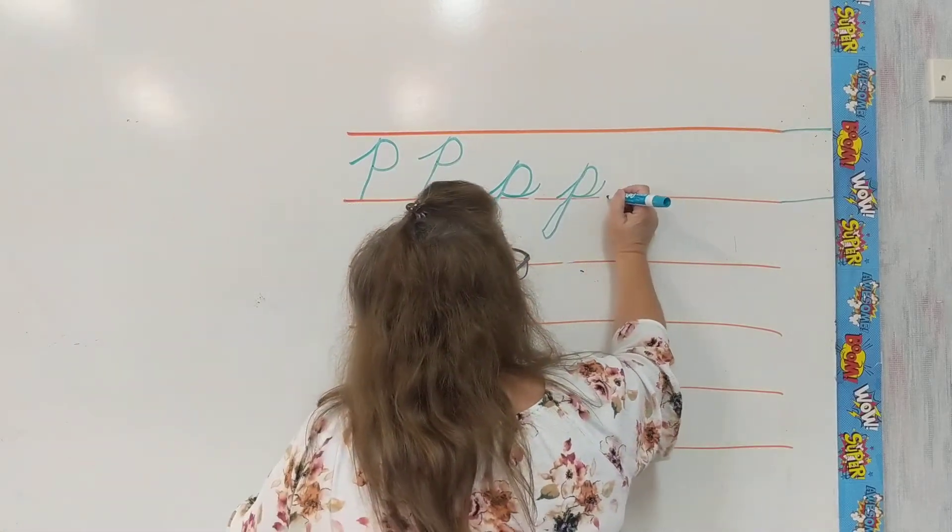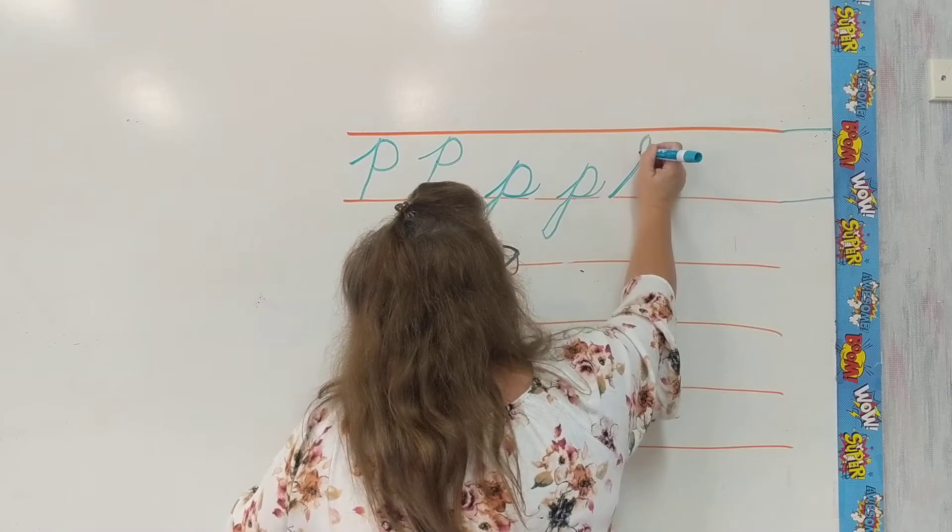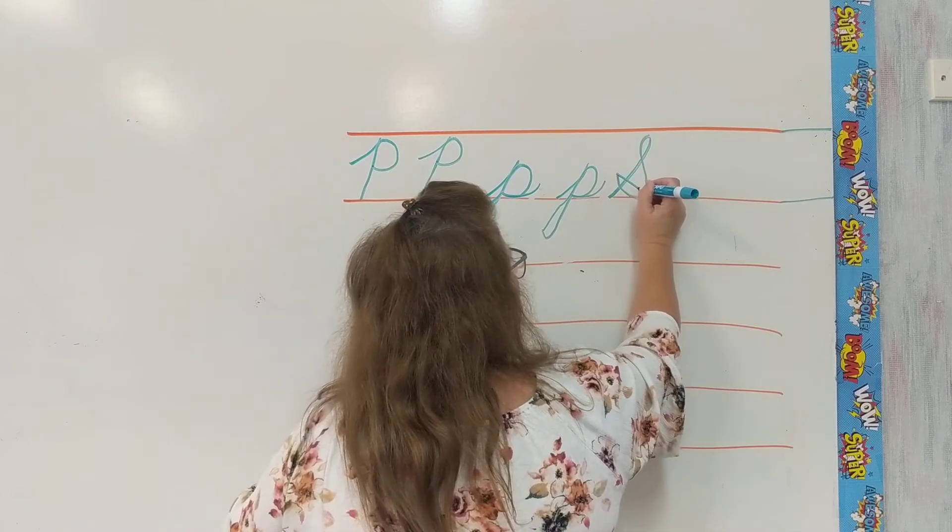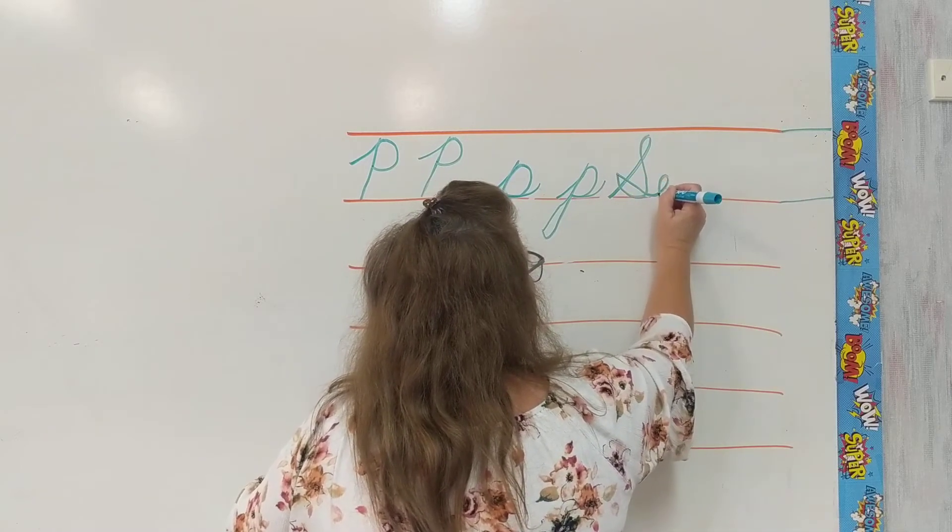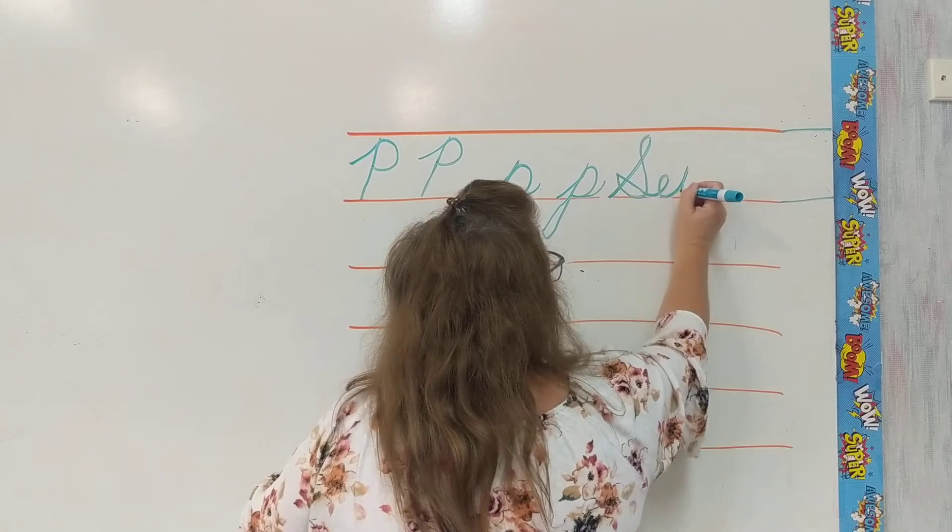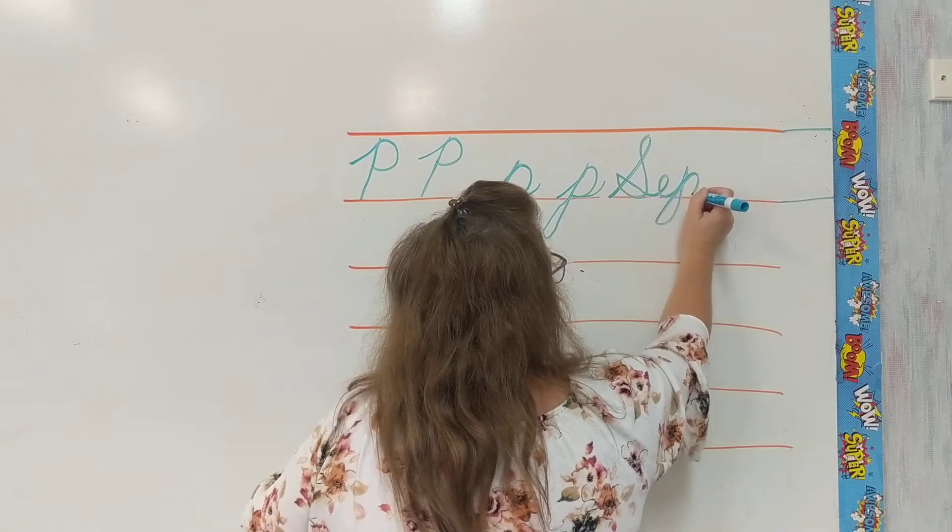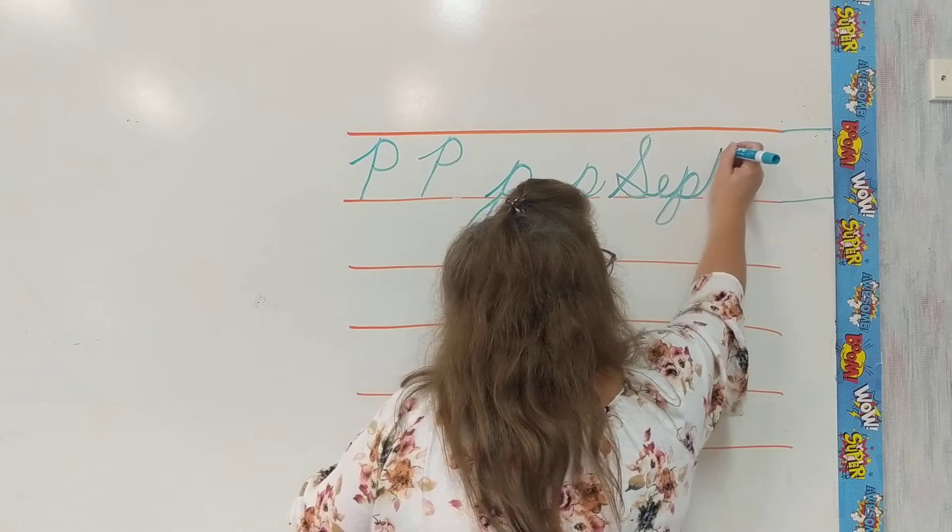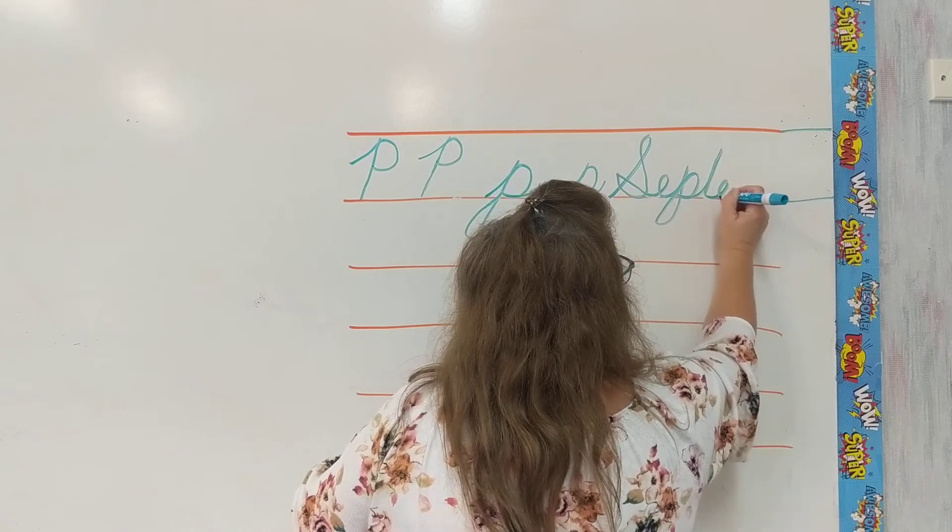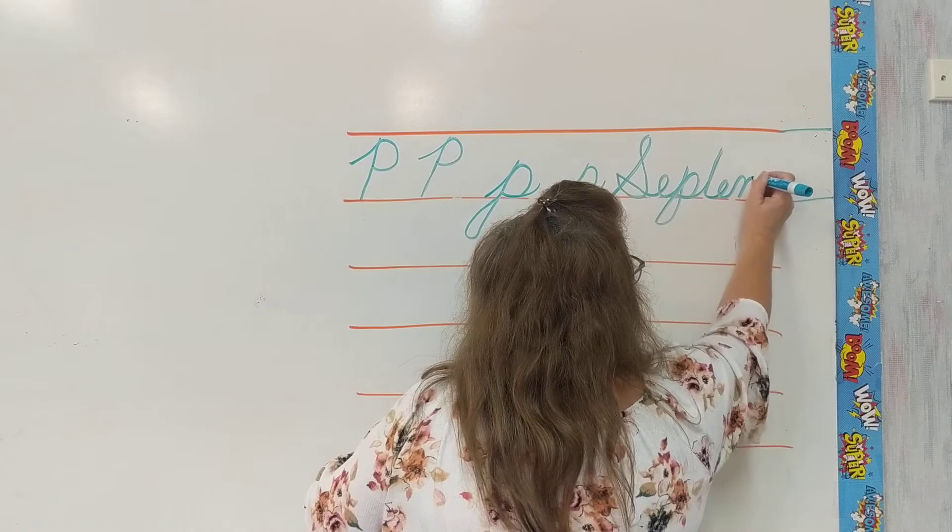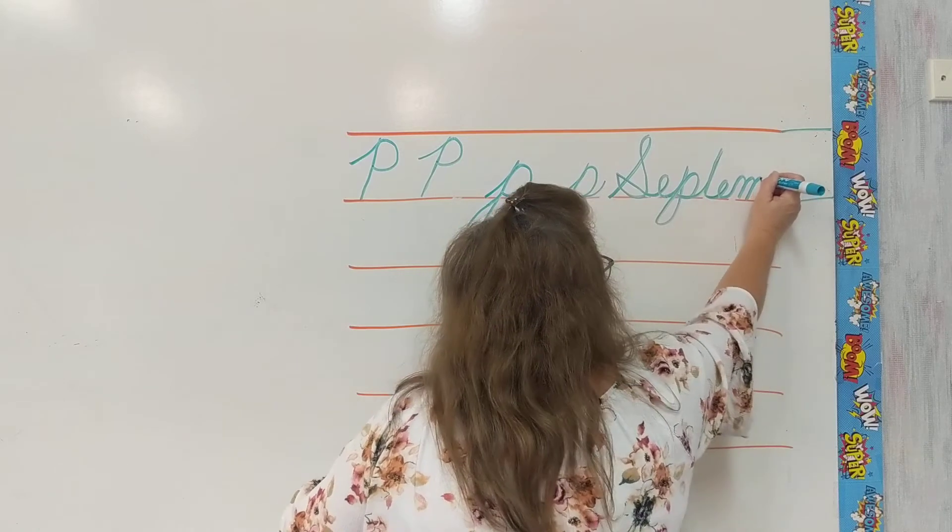So September starts with a capital S. We go around and come around. We're going to swing into our E. We're going to swing out and up into our P. We're going to swing out and up for our T. Swing out and into our E. Swing out into our M. M's have three humps.